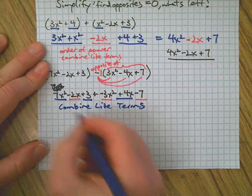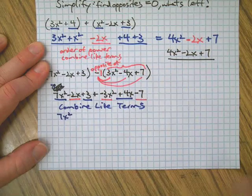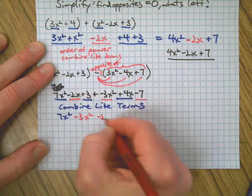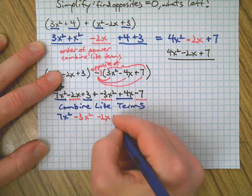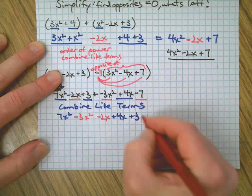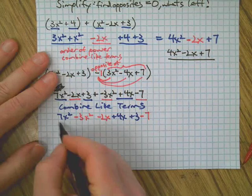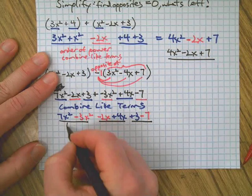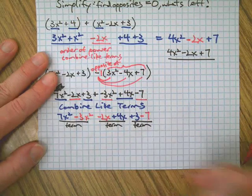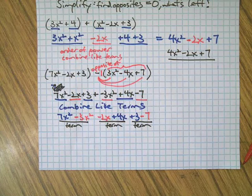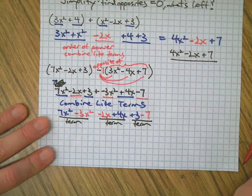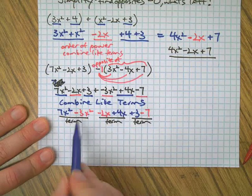Put all the x squareds together. 7x squared minus 3x squared. Then, there's a minus 2x and a positive 4x. And, there's a positive 3 and negative 7. So, I've got three terms here. There's a term, term, term. It means three different types of things, like apples, oranges, and bananas. Okay? I can put them all together, but I, unless I have a Vitamix blender, I can't put them all together, if you know what I mean.